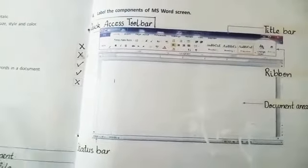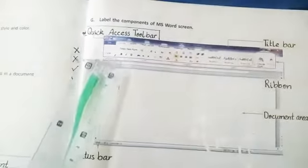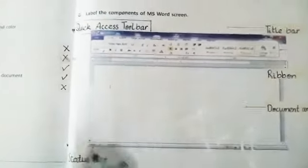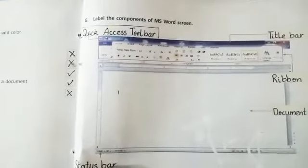Question number G is label the components of MS Word screen. Here is MS Word screen.